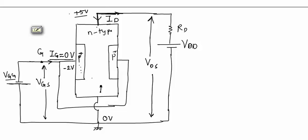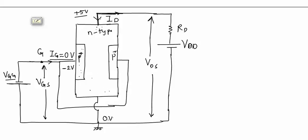For example, VGG is at minus 2V and the drain is at plus 5V with source grounded at 0V. The P-type gate is at negative potential and the N-type drain region is at positive potential, so the gate-to-drain junction is reverse biased. The gate-to-source junction is also reverse biased. The voltage difference at the drain end is around 7V while at the source end it is 2V, so the reverse bias between gate and drain is greater than between gate and source.